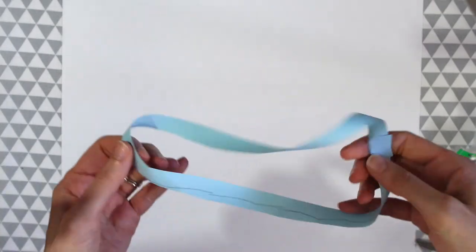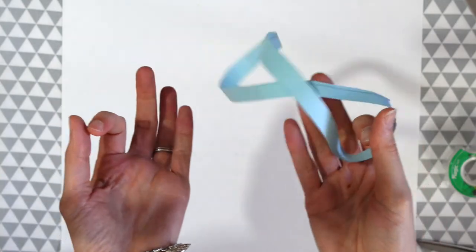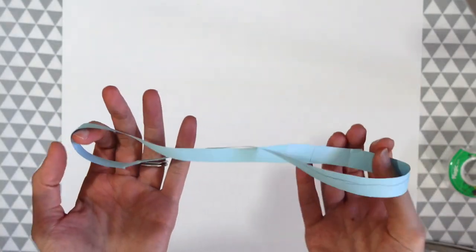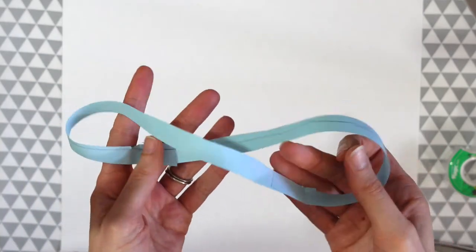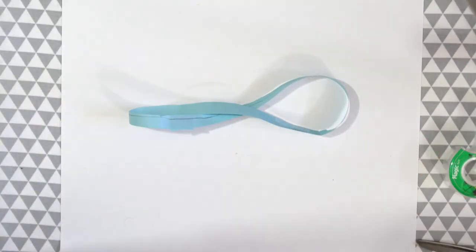And the moment of truth. Notice we just made a bigger Mobius strip. Our shape is still intact. So we made the exact same shape just bigger. So if you thought this was going to fall apart you were wrong. And that's why the Mobius strip is so interesting.